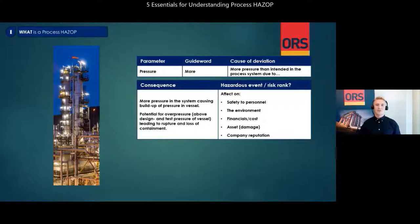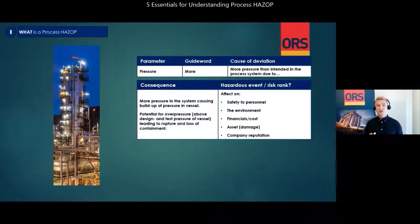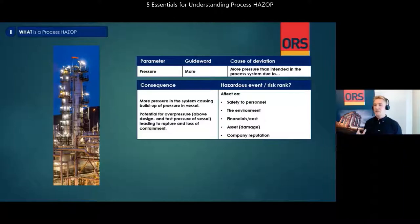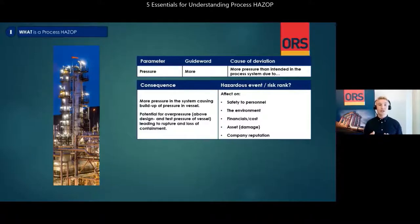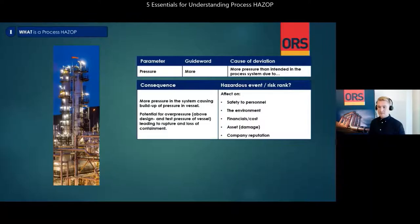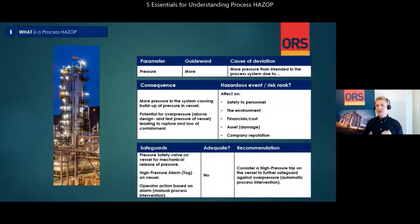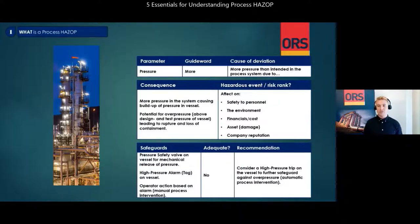Based on the client's requirement, a risk ranking may be applied to assess if the risk is acceptable or not. The consequence is normally described and risk ranked in the case of the following being affected: safety to personnel, the environment, financial and cost, asset damage, and company reputation. After the consequence is established, the group identifies and lists all safeguards that are in place to either prevent the hazardous scenario or mitigate the consequence. Such safeguards may be a pressure safety valve on the vessel, a high pressure alarm on vessel, and operator action based on the alarm, which is a manual process intervention.